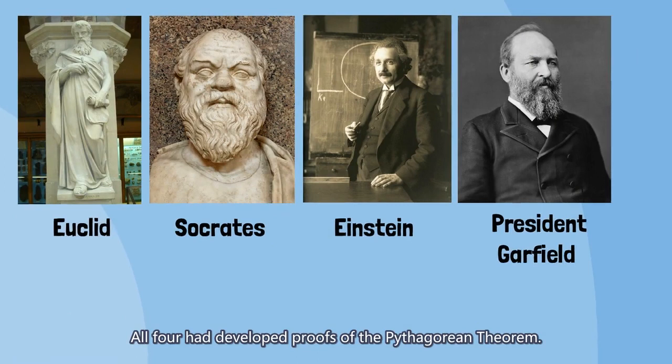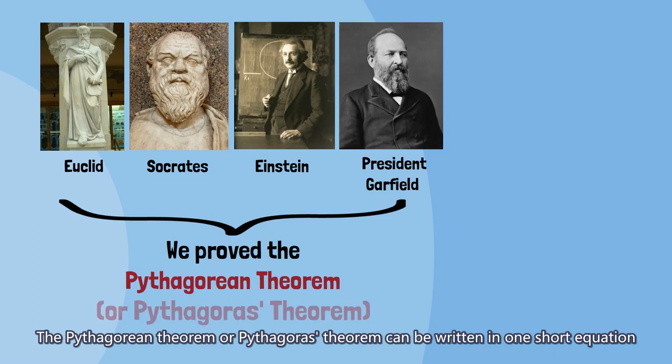What do Euclid, Socrates, Einstein, and President Garfield all have in common? All four had developed proofs of the Pythagorean theorem.